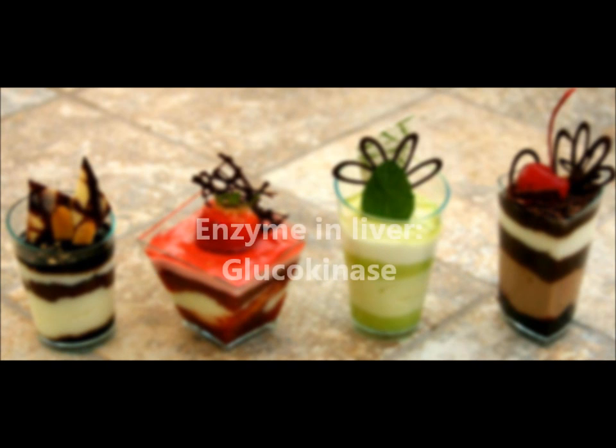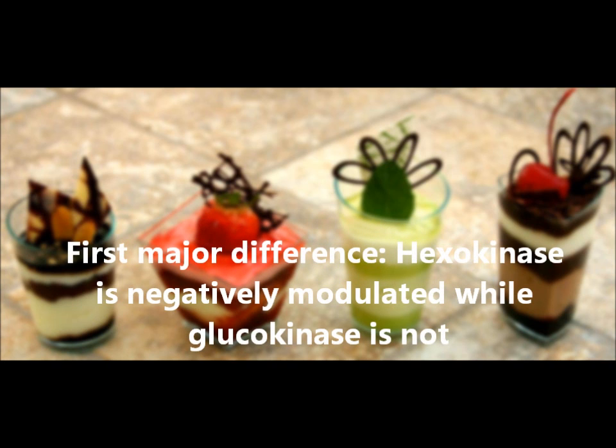On the other hand, glucose phosphorylation in the liver is catalyzed primarily by glucokinase, sometimes called hexokinase D. Although the reaction product, glucose 6-phosphate, is the same in both cases, there are some interesting differences between the two enzymes. Remember how hexokinase is negatively modulated by glucose 6-phosphate? Well, glucokinase is not. This characteristic allows extra glucose entering the liver cell to be phosphorylated quickly and encourages glucose entry when blood glucose levels are elevated.